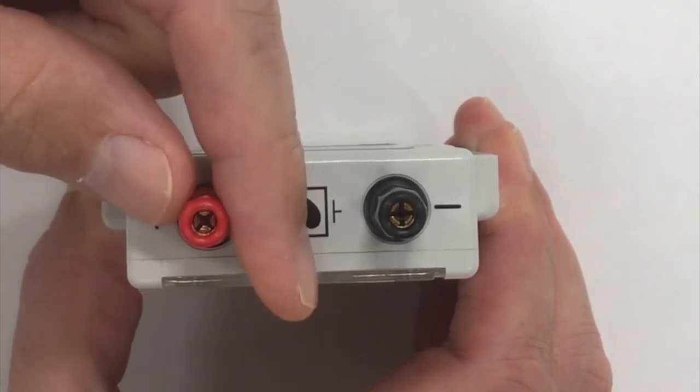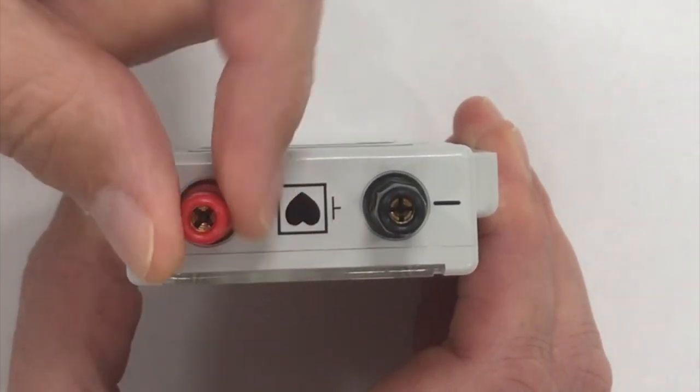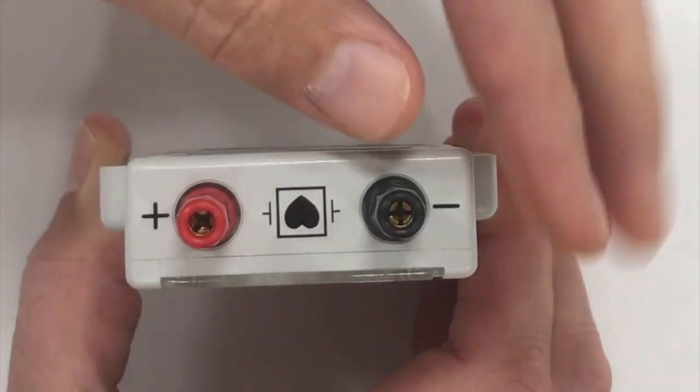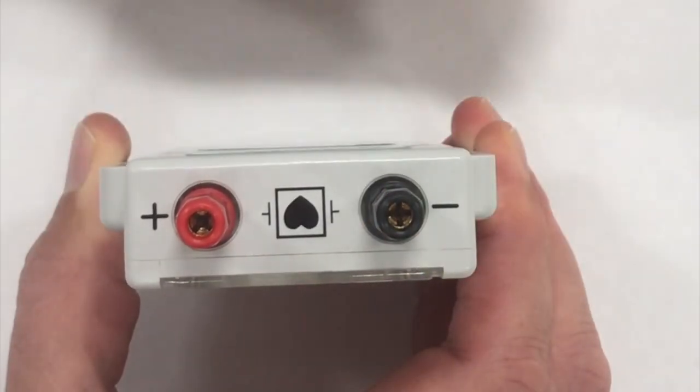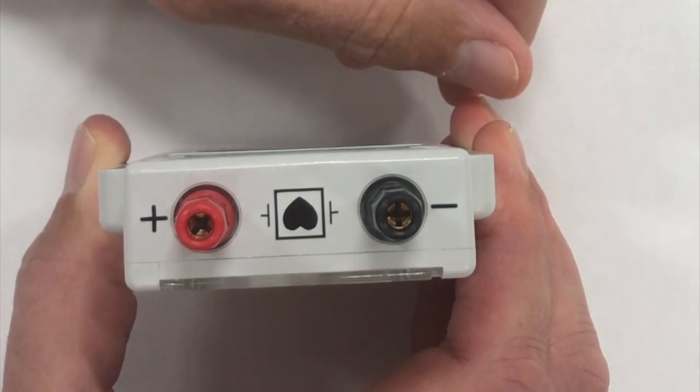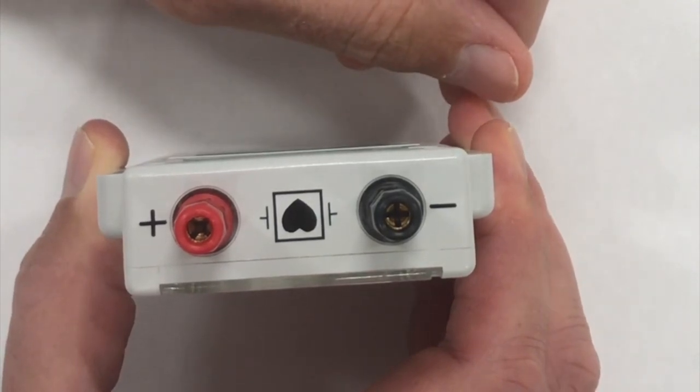Rotating them to the right tightens, and rotating them to the left loosens. And we have this plumber's acronym called Righty Tighty, Lefty Loosey. Left to loosen, right to tighten.